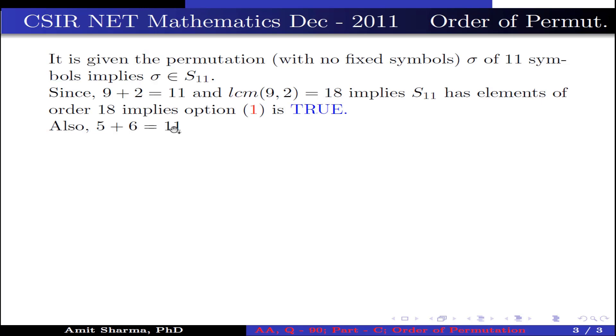Also, 5 plus 6 is 11 and LCM of 5, 6 is 30. This implies S11 has elements of order 30, or the permutation sigma can have order 30. This implies option two is true.